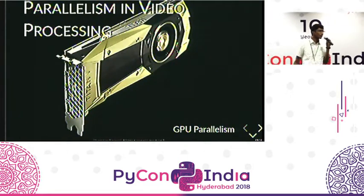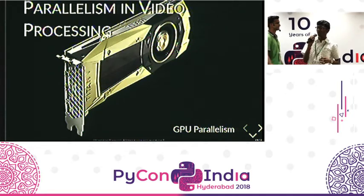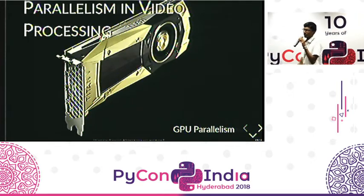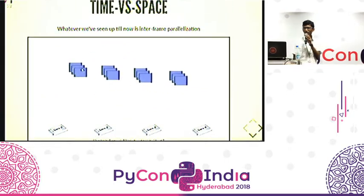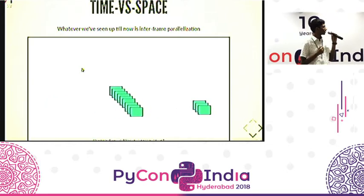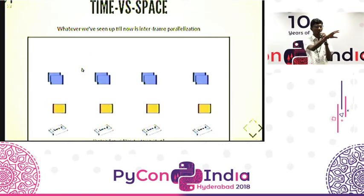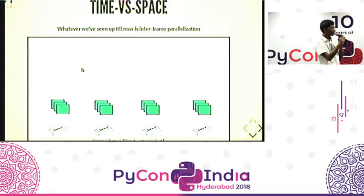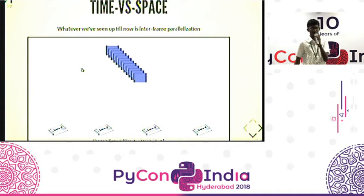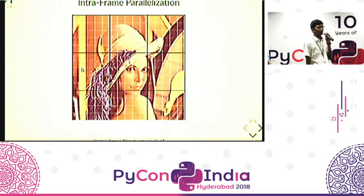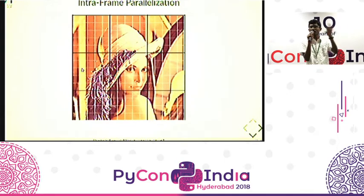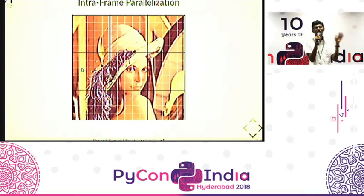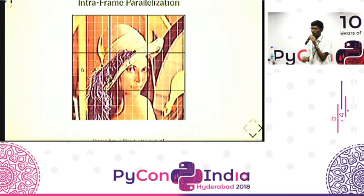Now for GPUs. We know GPUs are used for parallel processing — people in deep learning know how much acceleration you get training models on GPU vs CPU. So we'll see how to utilize the GPU for video processing. Till now we've seen inter-frame parallelism: splitting frames based on their temporal sequence position — first quarter, next quarter, and so on — where each frame is the fundamental unit. There's also intra-frame parallelism, where you split each frame into different sub-blocks and operate on those. You split not just across time but also across space. That's the difference between intra and inter-frame parallelism.